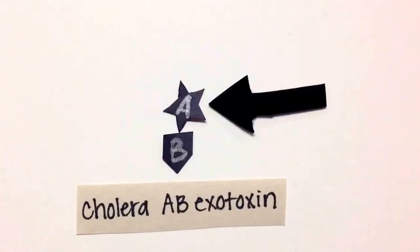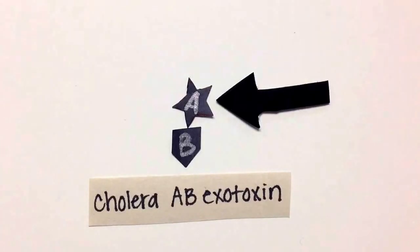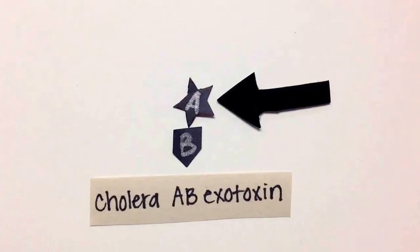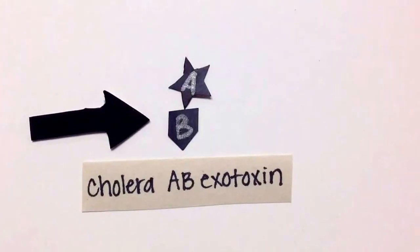The Vibrio cholera bacteria produces an AB binary exotoxin that has two distinct toxin components, A and B. The A portion has enzymatic activity that contributes to its toxicity, and the B portion binds to the host receptor, the ligand binding portion.